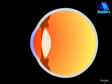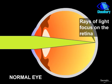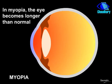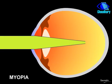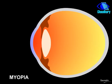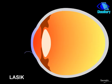Understanding LASIK. In a normal eye, rays of light focus on the retina. In myopia, the eye becomes longer than normal and therefore the rays of light focus ahead of the retina. LASIK involves the reshaping of the front portion of the eye called cornea so that the rays of light will now focus on the retina.